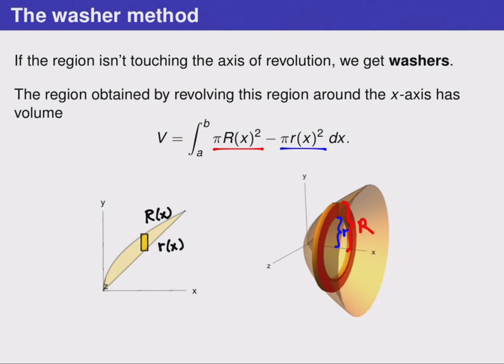In red, we have pi capital R of x squared. That's the outer edge of the cylinder. And on the right hand side in the three-dimensional region, we can see how that same radius, capital R, gives us the outside radius of a washer. In blue, we have the inner radius of the inside edge. And in this integral, we're subtracting the area of a cylinder that sits inside the larger cylinder.